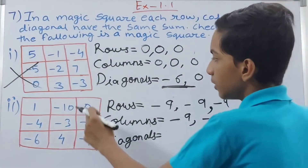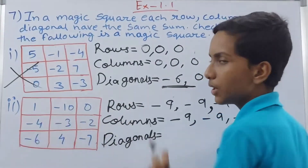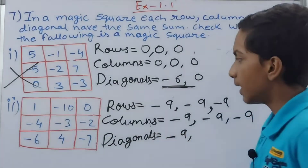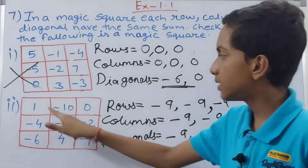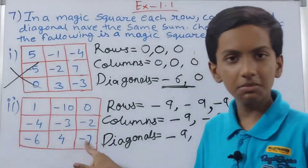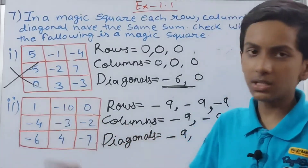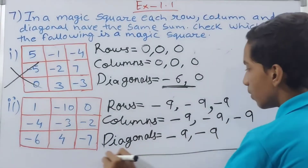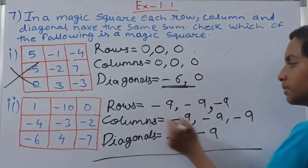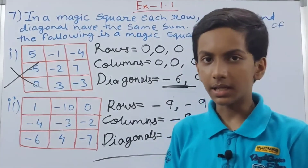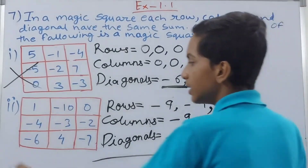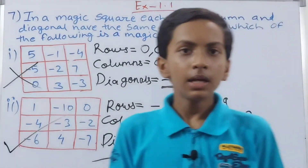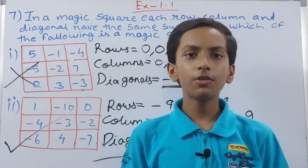Now the diagonals. First diagonal: ignoring zero, minus 6 minus 3 gives minus 9. Second diagonal: minus 3 minus 7 is minus 10, minus 10 plus 1 is minus 9. All rows, columns, and diagonals give the same sum of minus 9, so this is a magic square.